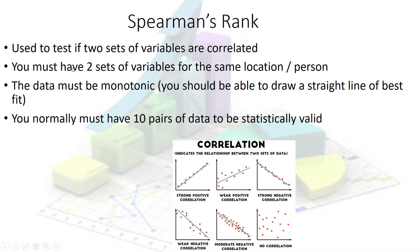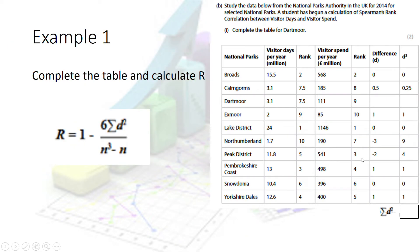The relationship also has to be monotonic, meaning you need to be able to draw a straight line through the data — it can't be a curve or a hump. Ten pairs of data is the normal minimum required; obviously the more pairs you have, the stronger the result. Because it's for the same location, you have two paired values per data point.